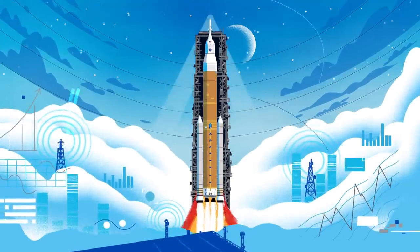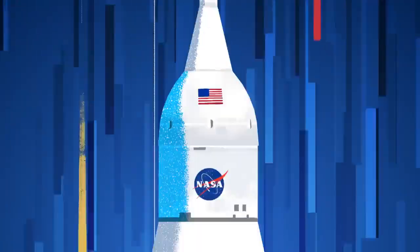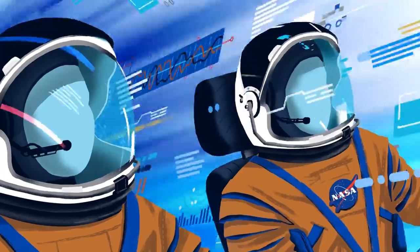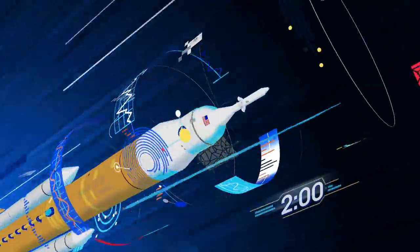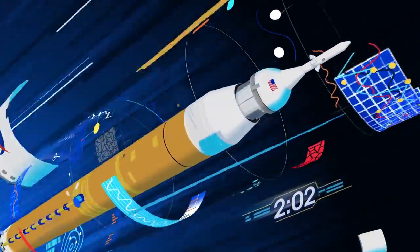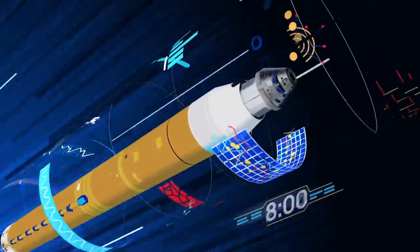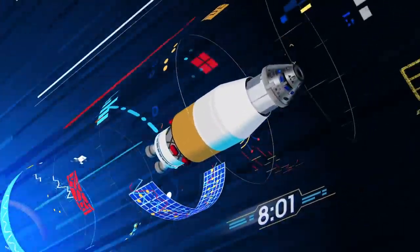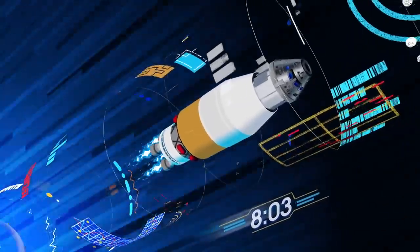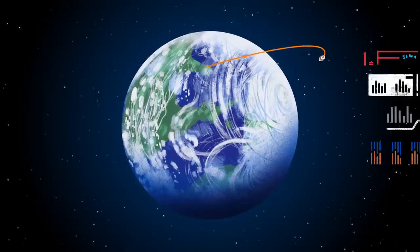All four RS-25 engines and the two solid rocket boosters come to life thundering our crew upwards. Two minutes after ignition, the solid rocket boosters are spent and released. Eight minutes after launch, the core stage is depleted and separated. The upper stage fires briefly, placing Orion into a parking orbit around the Earth.